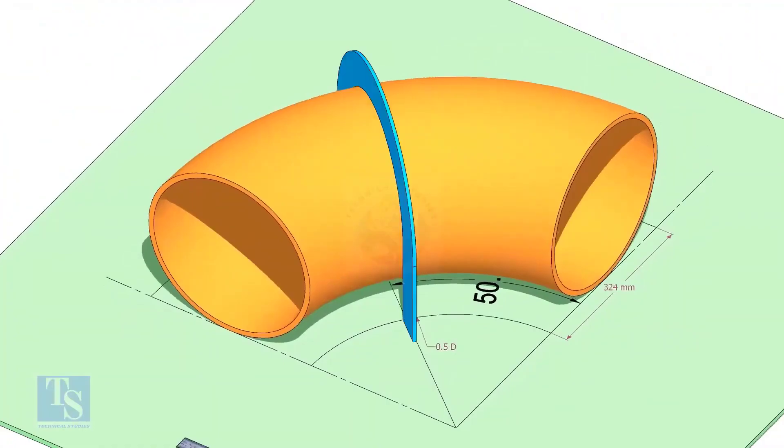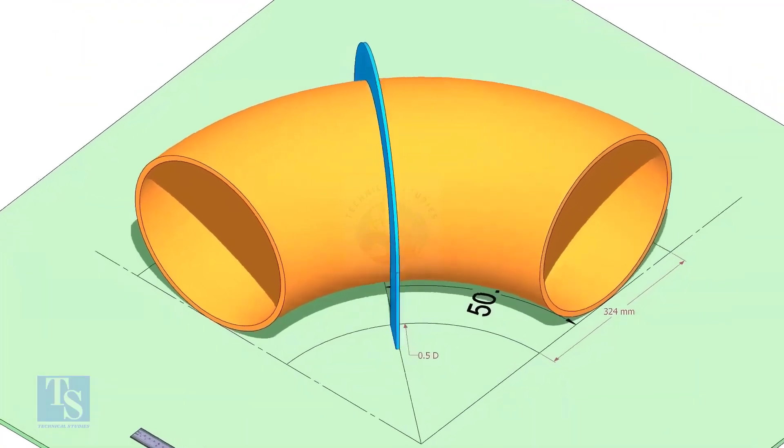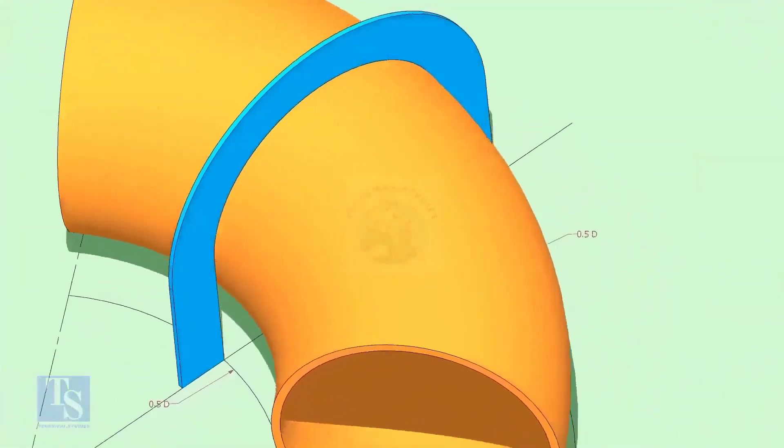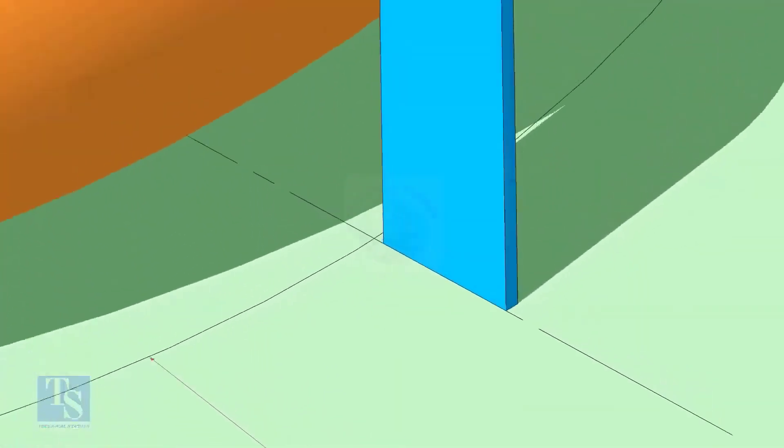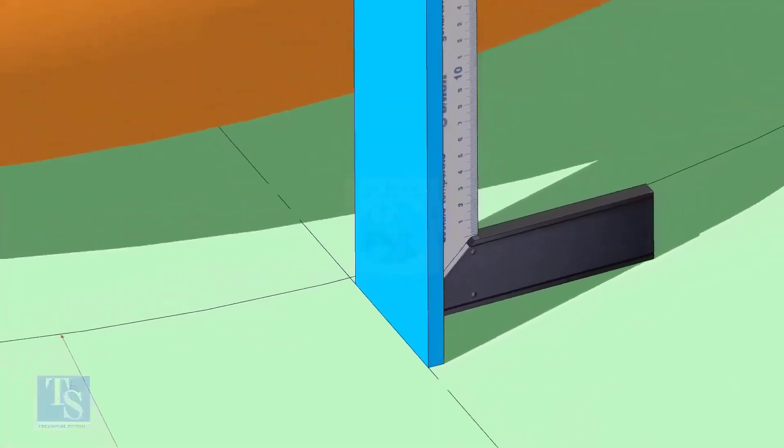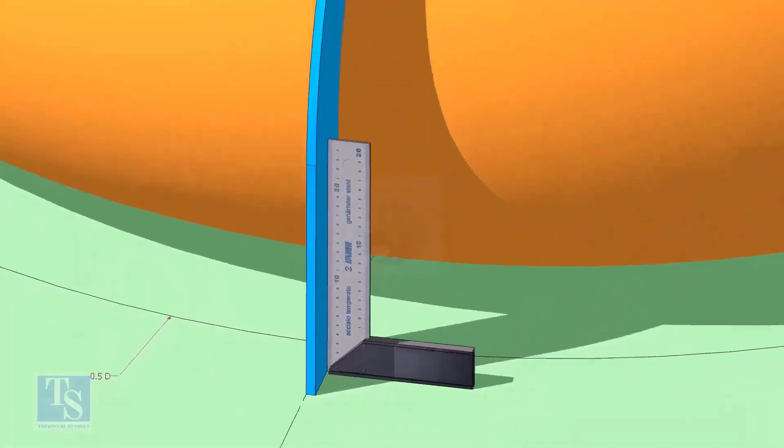Put the half radius plate on the elbow as shown, make sure it sits on the degree line. Make the squareness.